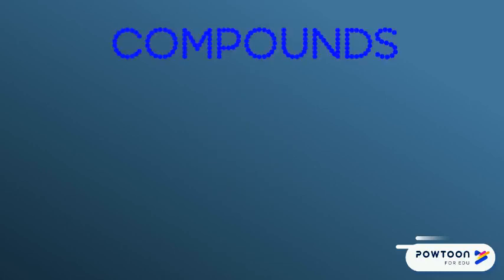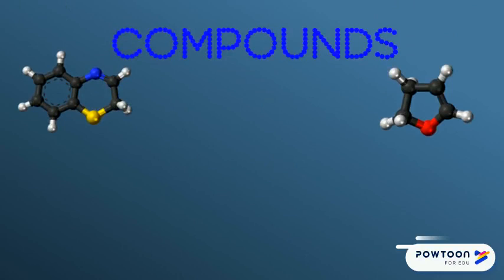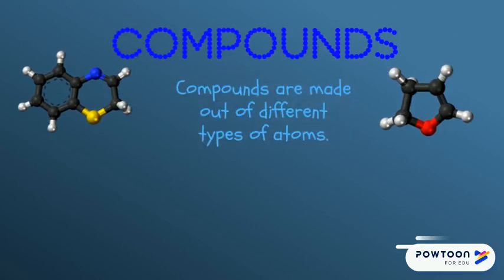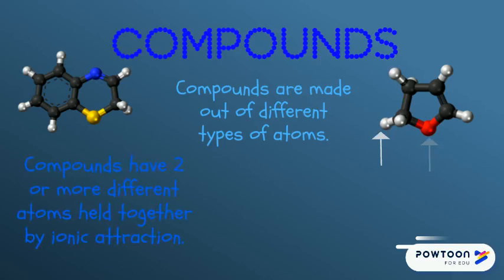Now let's take a look at compounds. Compounds are different from molecules because when compounds are made, they are made of different types of atoms joining together. Compounds have to have two or more different atoms, and they're held together by ionic attraction.